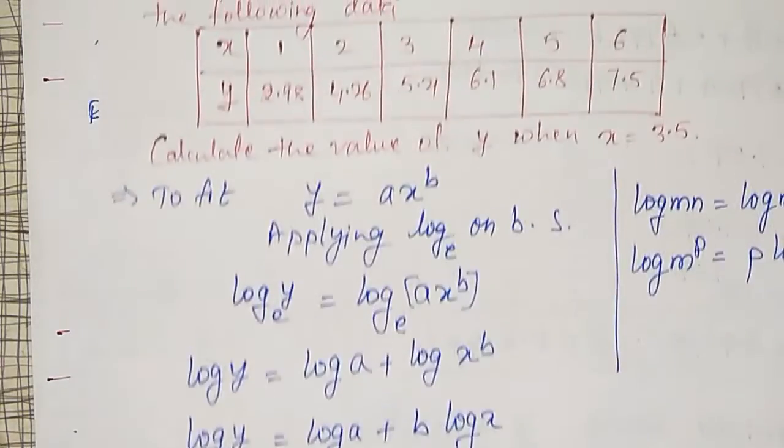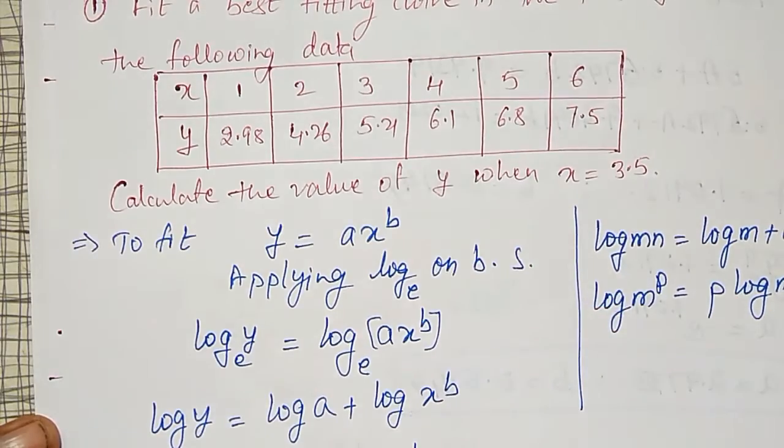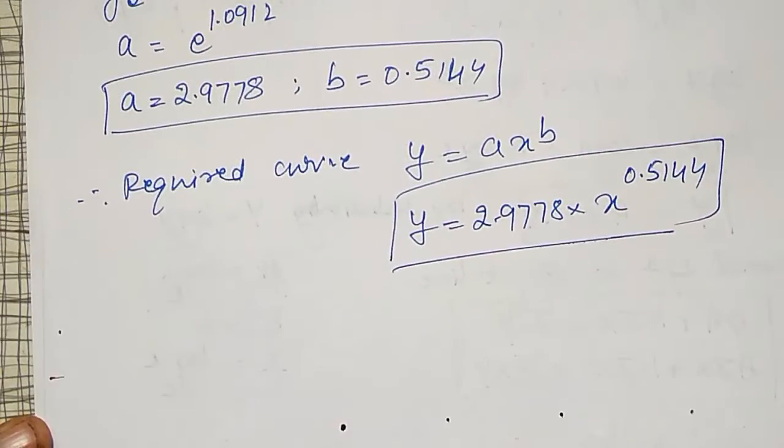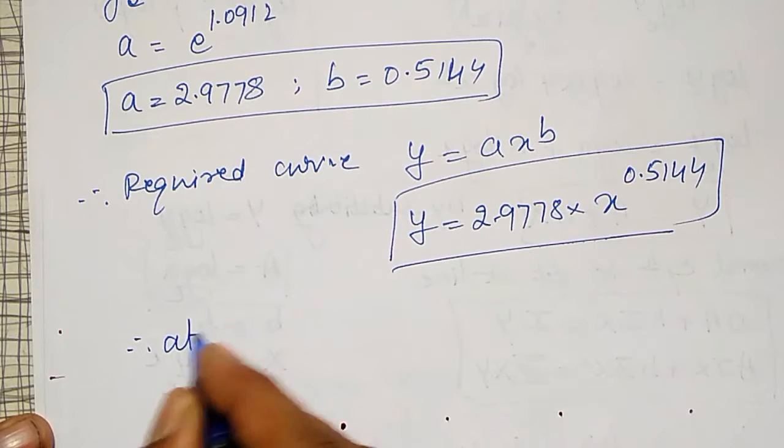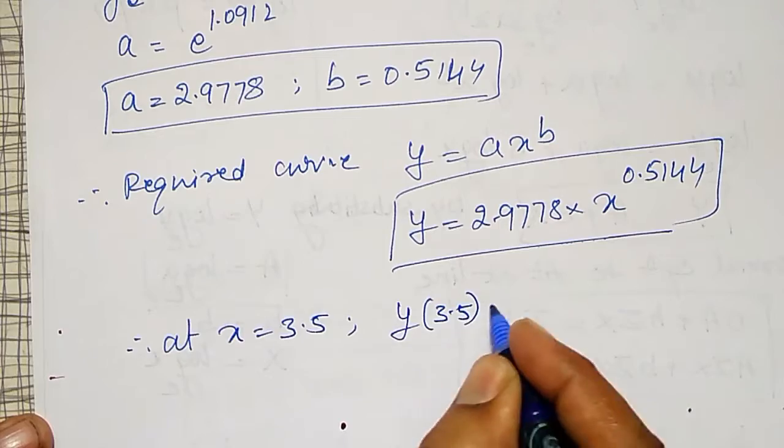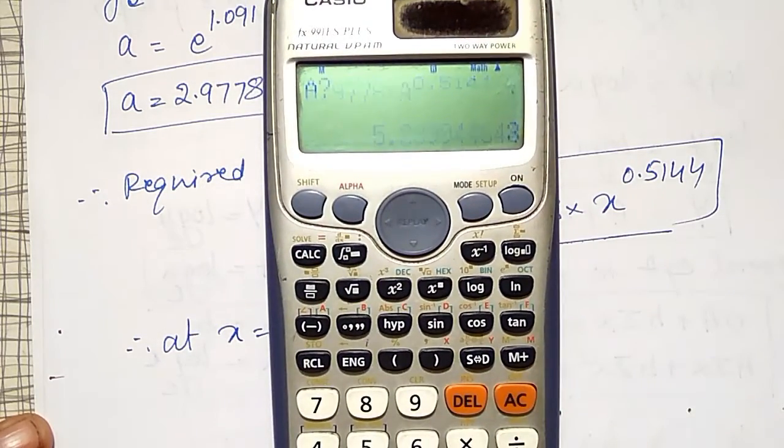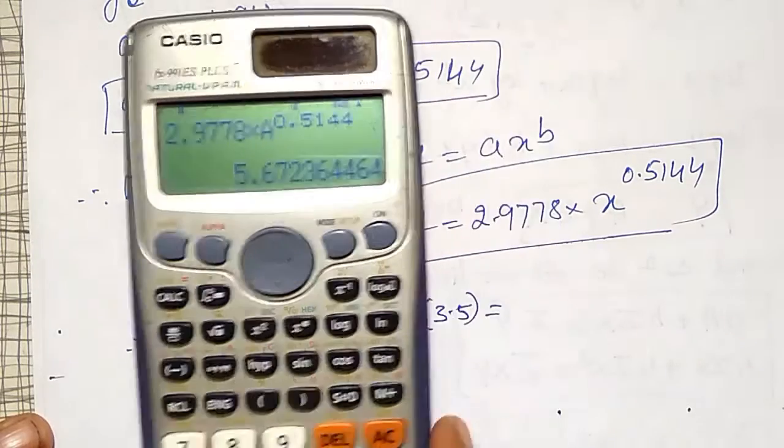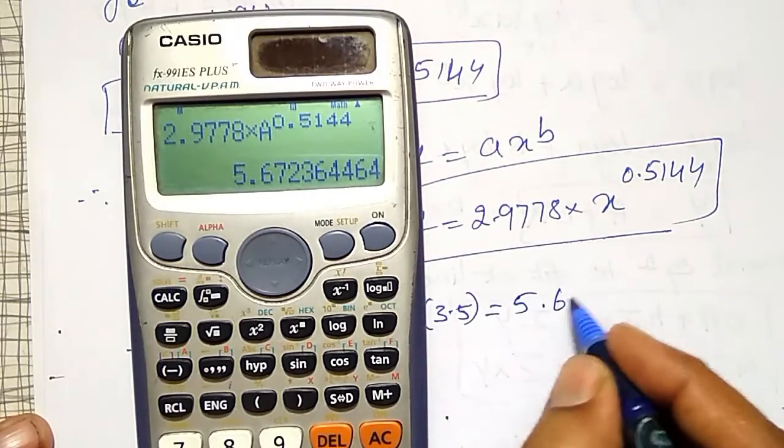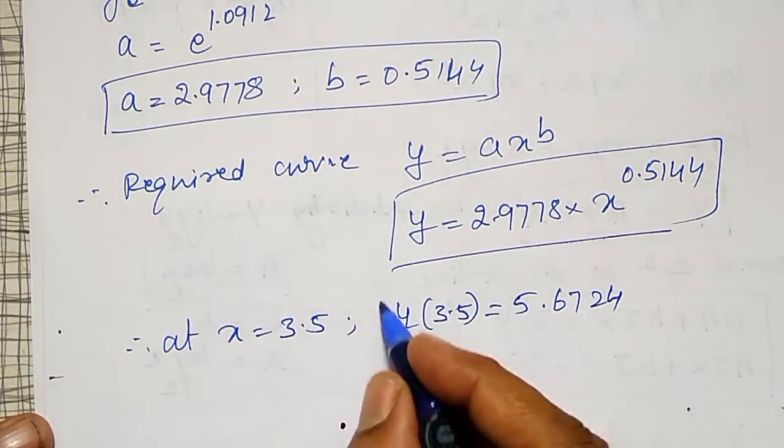And in the question they have asked, you have to find y value when x equal to 3.5. Therefore at x is equal to 3.5, y of 3.5 is equal to, in this equation that expression is already entered, equal to, a value is 3.5, that is 5.6724. Up to 4 decimal places.